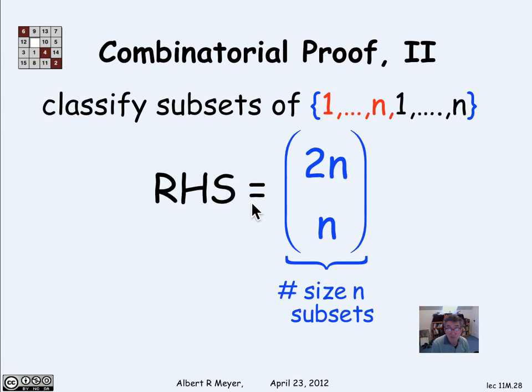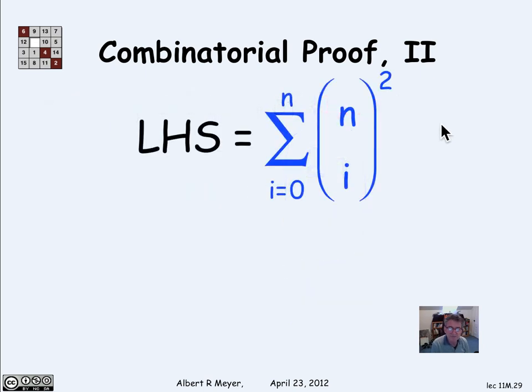And of course, the right hand side is the number of size n subsets among these 2n elements. And that's where I kind of maybe got this clue of splitting it up into reds and blacks. But really, I got the clue from the other side. Let's look at the left hand side now.